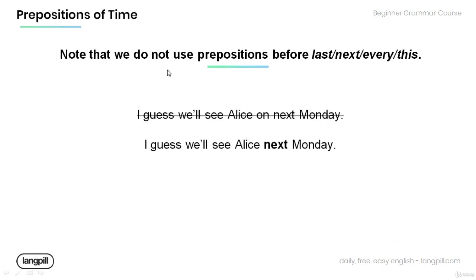Also note that we do not use prepositions before 'last,' 'next,' 'every,' or 'this.' Have a look at the sentences below: I guess we'll see Alice on next Monday. Now this sentence would be incorrect because the preposition 'on' is not supposed to be used before 'next.' The correct form would be: I guess we'll see Alice next Monday.